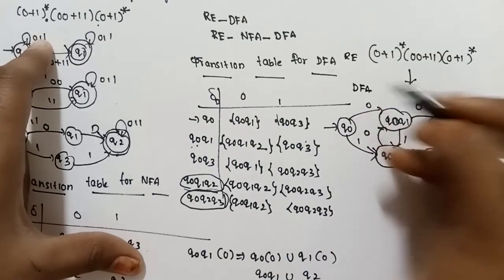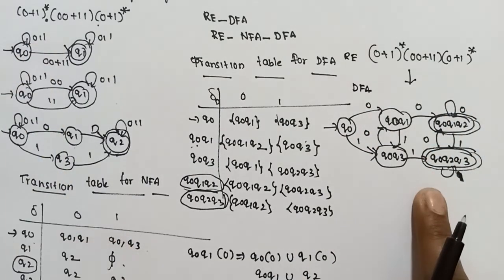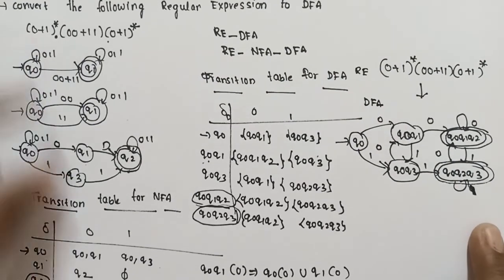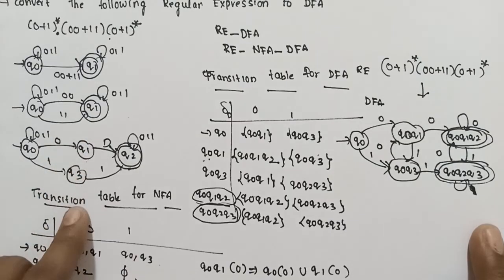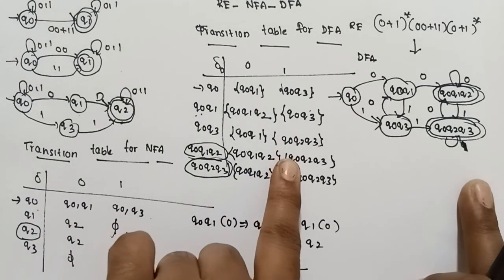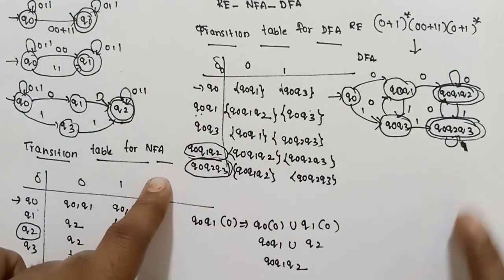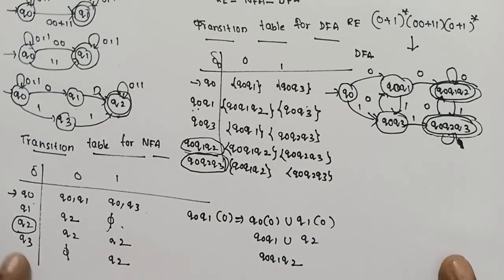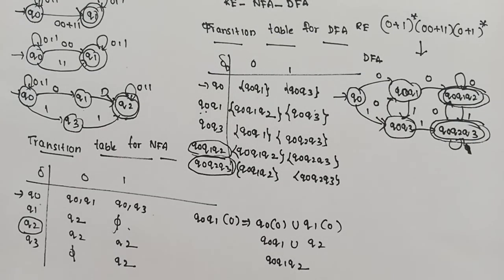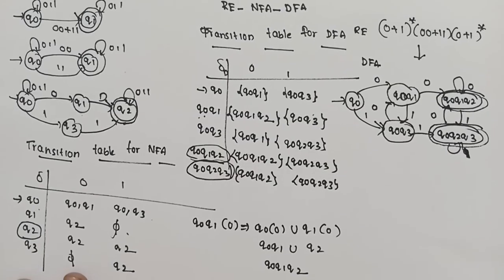This completes the DFA. So this regular expression is now converted to a DFA. To summarize: first construct the NFA from the regular expression, then build the NFA transition table, and finally convert the DFA transition table from the initial state to the final state.